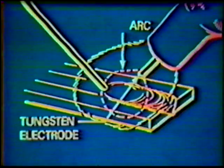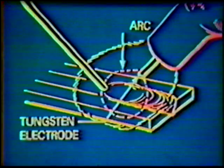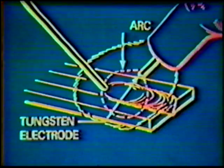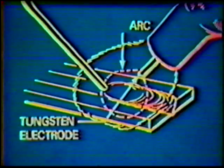The electrodes used with the process are tungsten alloys with an approximate melting point of 6,170 degrees Fahrenheit, and are used as the heat source that produces the puddle. When welding steel pipe, the one percent or two percent thoriated tungstens are usually used. The two percent is the most common since it provides better arc starting, arc stability, and higher current carrying capacity.